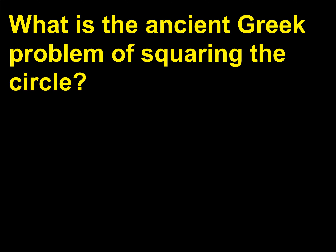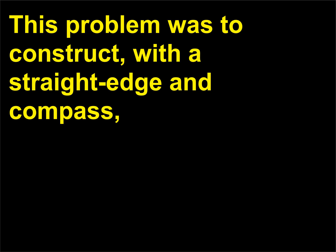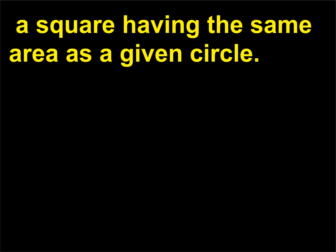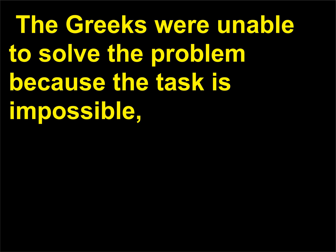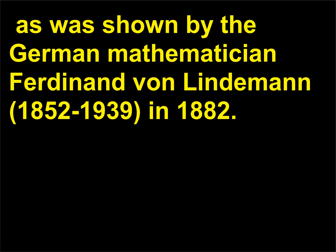What is the ancient Greek problem of squaring the circle? This problem was to construct, with a straight edge and compass, a square having the same area as a given circle. The Greeks were unable to solve the problem because the task is impossible, as was shown by the German mathematician Ferdinand von Lindemann, 1852–1939, in 1882.